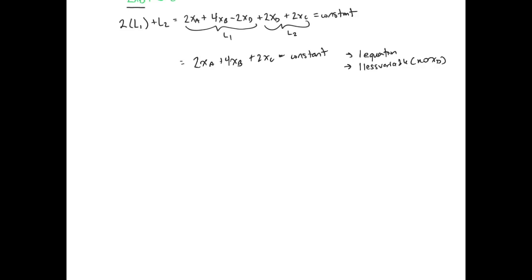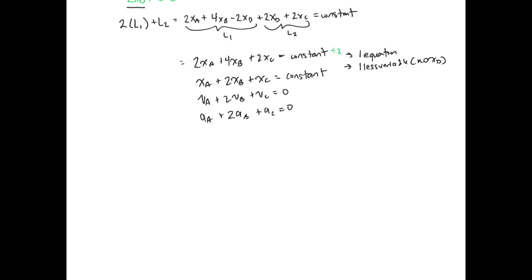If we take this equation and divide by 2, we get xA plus 2xB plus xC equals a constant. Taking the derivatives, we have vA plus 2vB plus vC equals 0, and acceleration of A plus 2 times the acceleration of B plus acceleration of C equals 0. These three equations define the motion of all particles in our system.